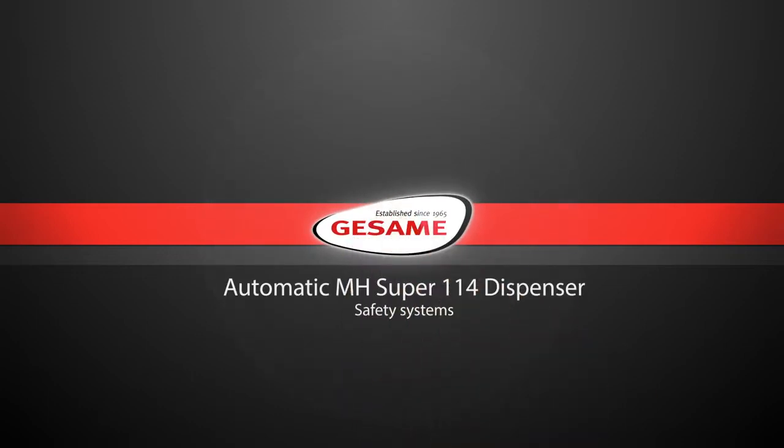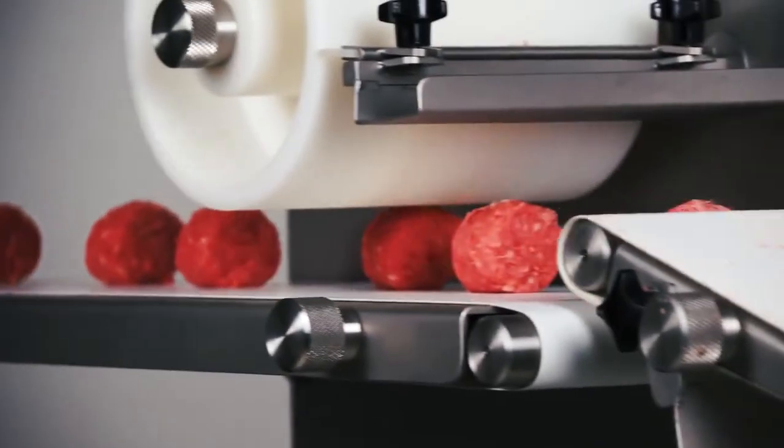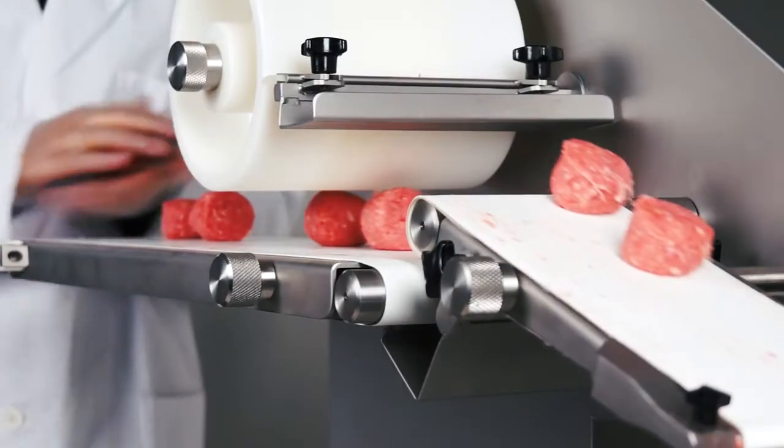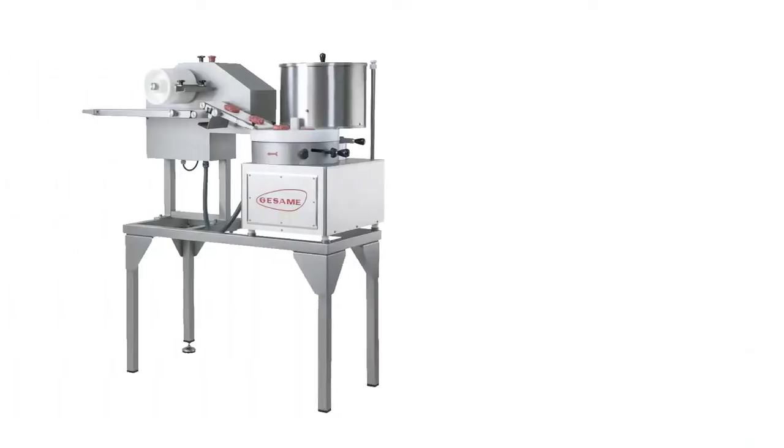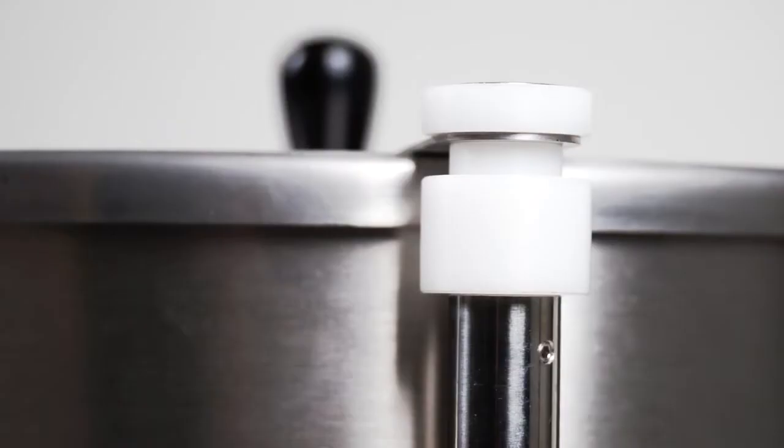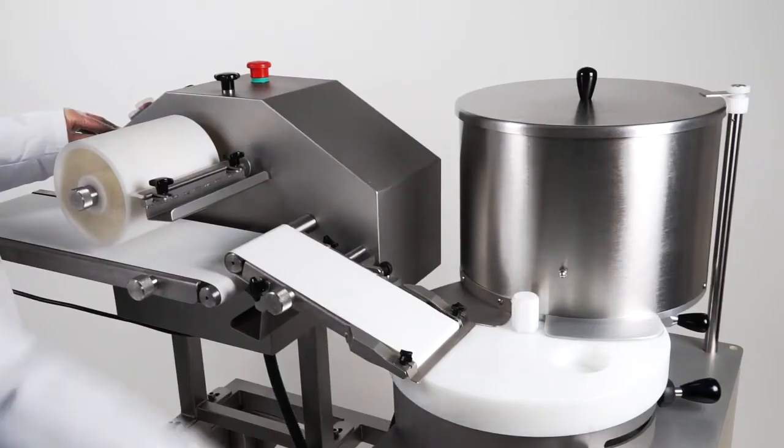Safety systems. The MH super 100 has three safety micros to ensure work that is danger-free for the operator. The first is found in the lid of the tank which blocks the machine if the tank lid is not correctly positioned. Its purpose is to prevent the meat inside from being manually handled while the machine is in operation.